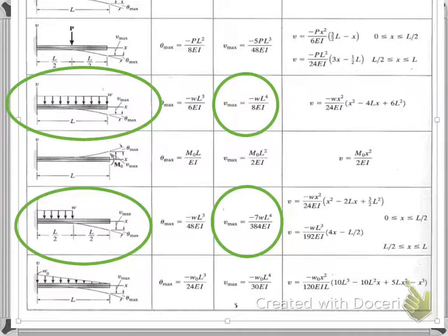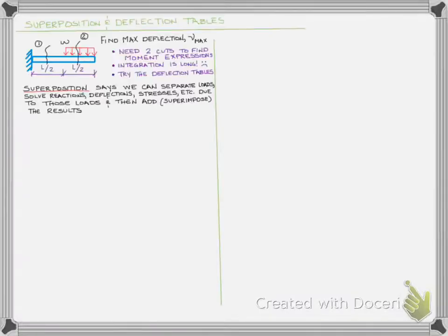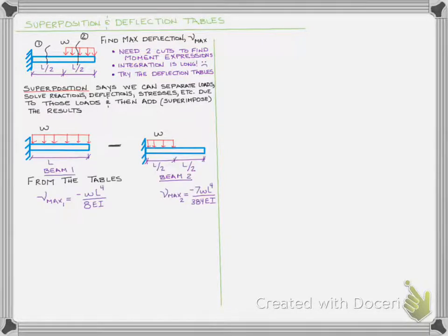Let's take these two beams and bring them back to our problem. So I'm taking that first beam with the load across the entire length, and from the tables we got that the maximum deflection at the free end would be negative WL to the fourth over 8EI. And then the second beam that only had the uniform load over the first half, the tables told us at the free end the deflection would be negative 7WL to the fourth over 384EI.